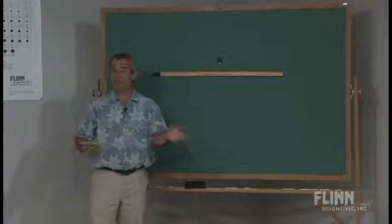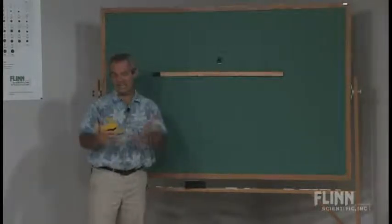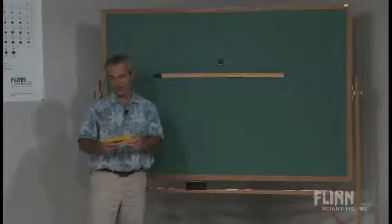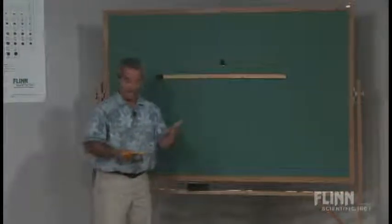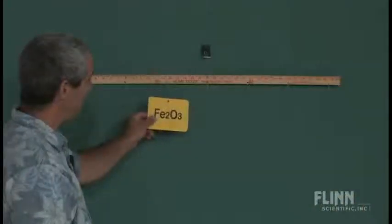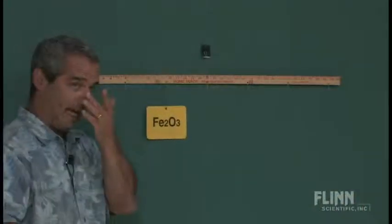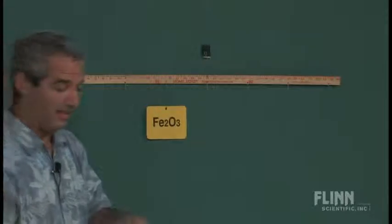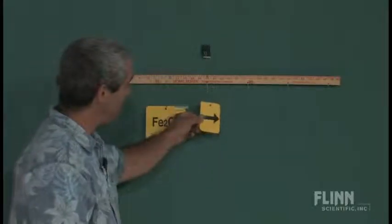We've talked about balancing equations in class maybe the day before, and I like to get up and do this demonstration for them. So we have the compound iron 3 oxide, that's Fe2O3. And under certain conditions, maybe enough heat is added to it, it can be decomposed.